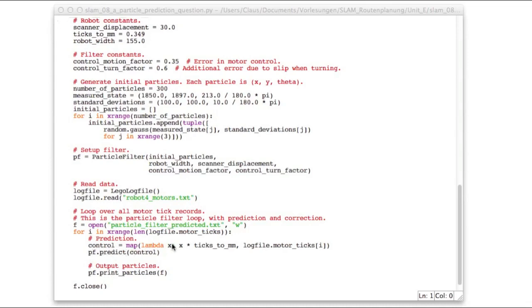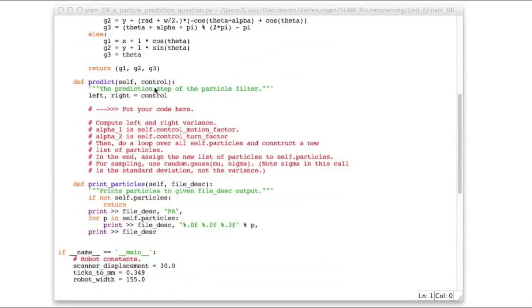And in the loop, we have our usual conversion of the motor ticks to millimeters, and then we just call predict. So this call replaces the old particles in the particle filter by a new set of particles, which are then printed out. And then we take the new control, and again replace the old particles by new particles, and so on.